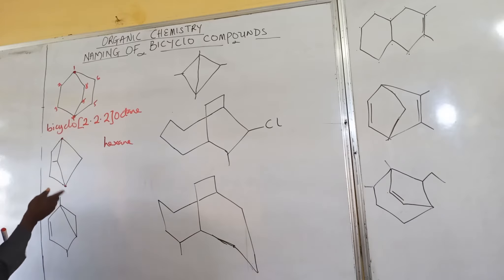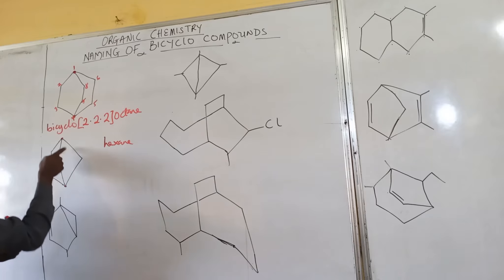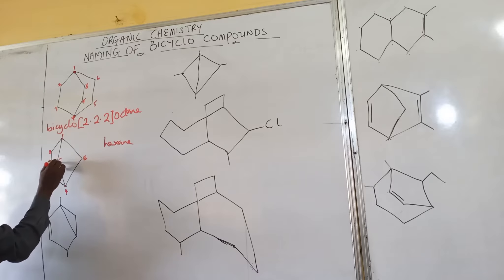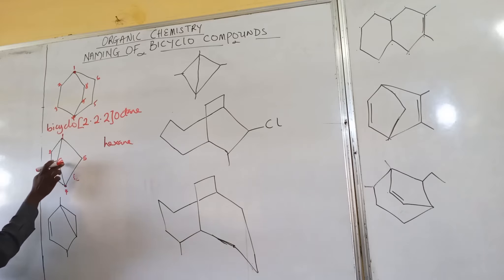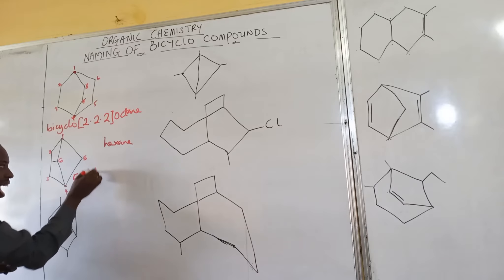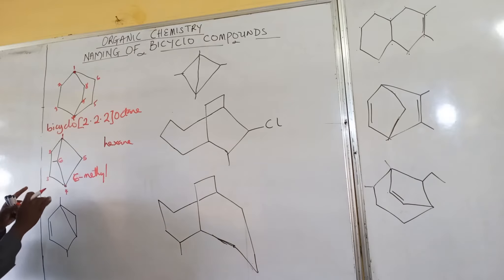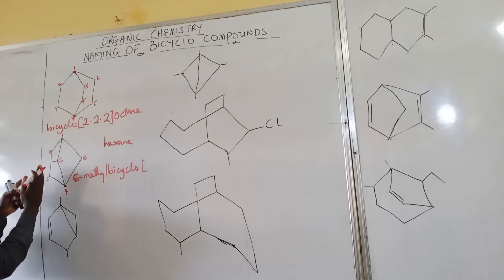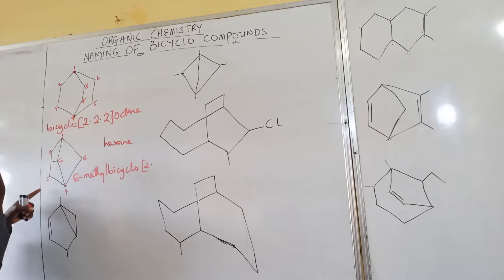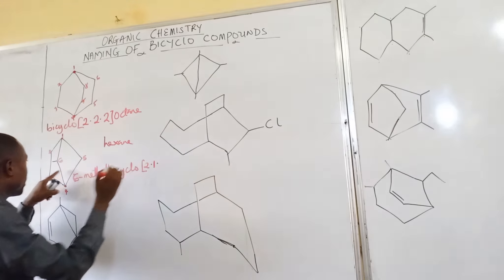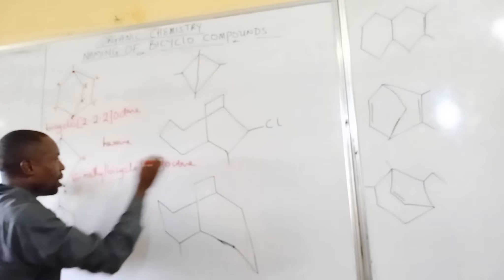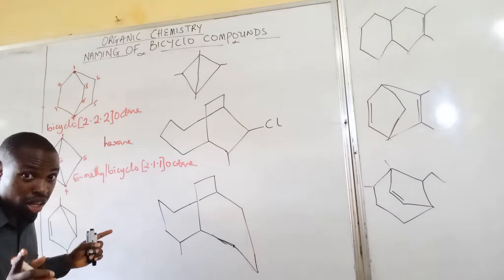The larger side has one, two carbons and the other side has one, so you follow this side: one, two, three, four, five, then six. The other marginal bridge carbons — there are two on one side, one on the other, and one in the middle. The parent name is hexane, and the compound is named accordingly. I hope you are following — let's continue to the next one.